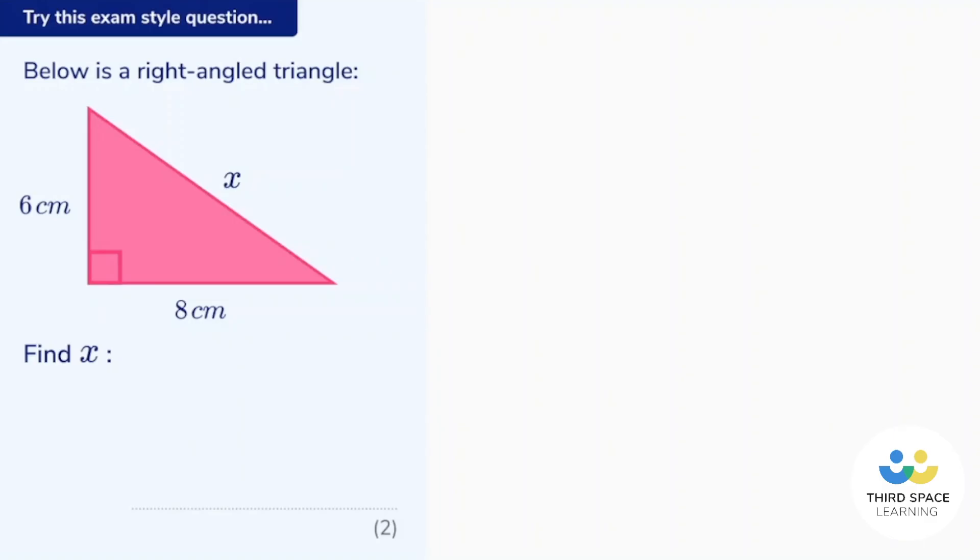Now let's see what this looks like in an exam style situation. Below is a right-angled triangle and we can see that we've got the right angle in the corner and we know two of the three sides of this triangle. Well this tells me if I want to work out x I can use Pythagoras' theorem which is a squared plus b squared equals c squared. Okay, next job. Let's label our triangle.